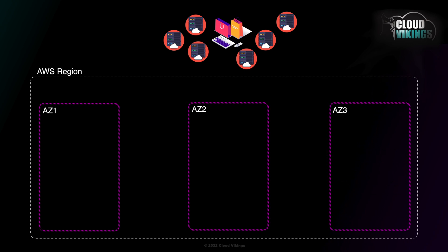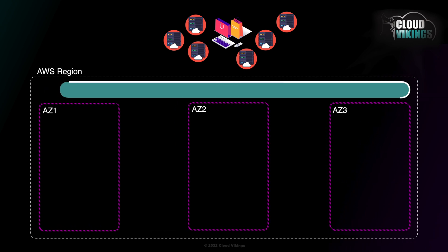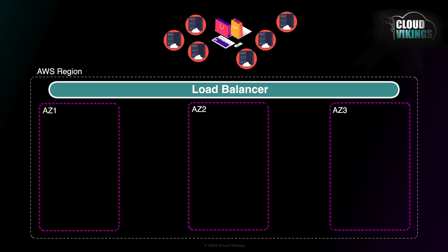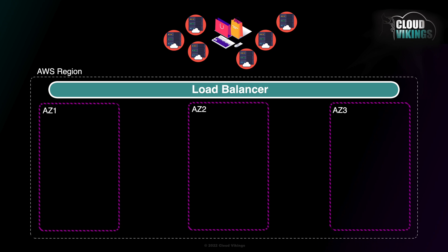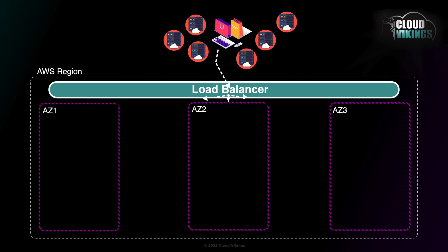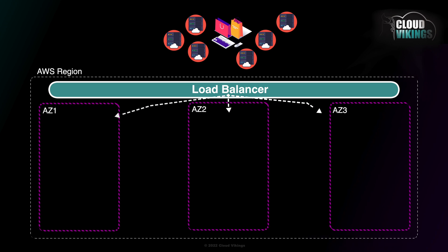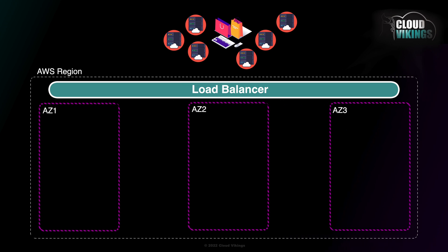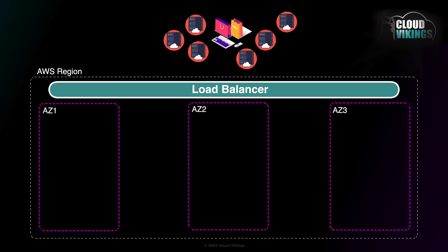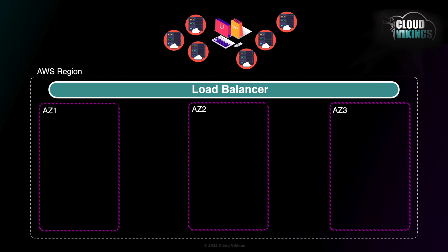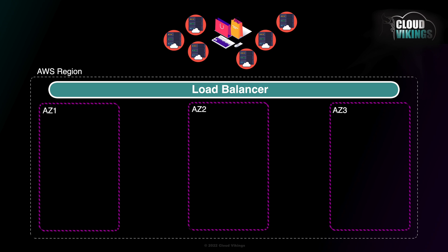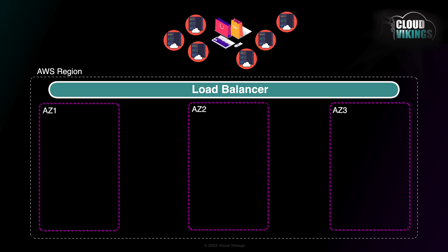To help us out in this example we'll throw in a component called a load balancer. This load balancer will simply distribute our incoming web traffic to the available backend web servers. Now our example business is just getting going here — we have a new engineering team and we just want to keep our design simple, so we run our six servers in AZ1.